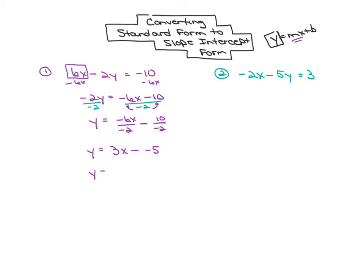And finally, let's get rid of the double negatives. So 3x plus 5. We're using algebra work to convert from standard form to slope-intercept form by isolating y and then simplifying the right side.